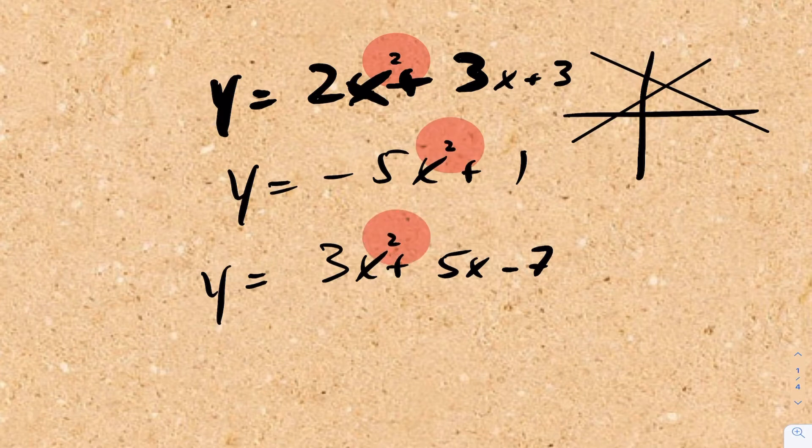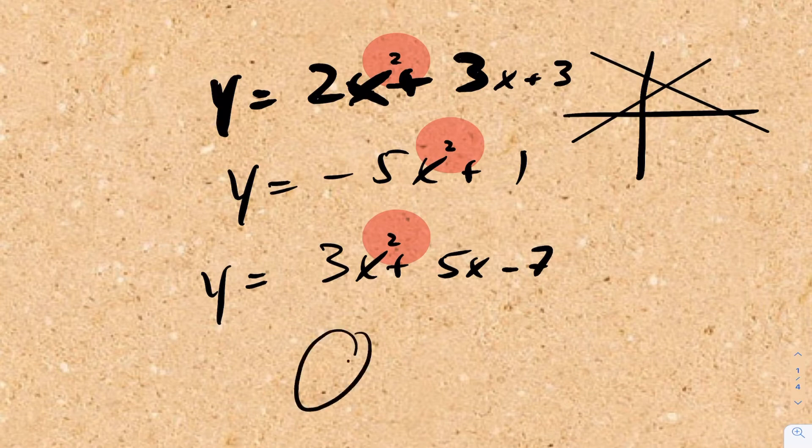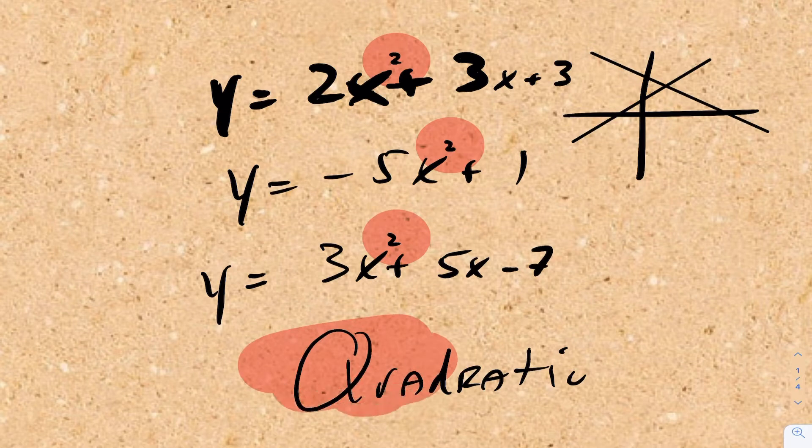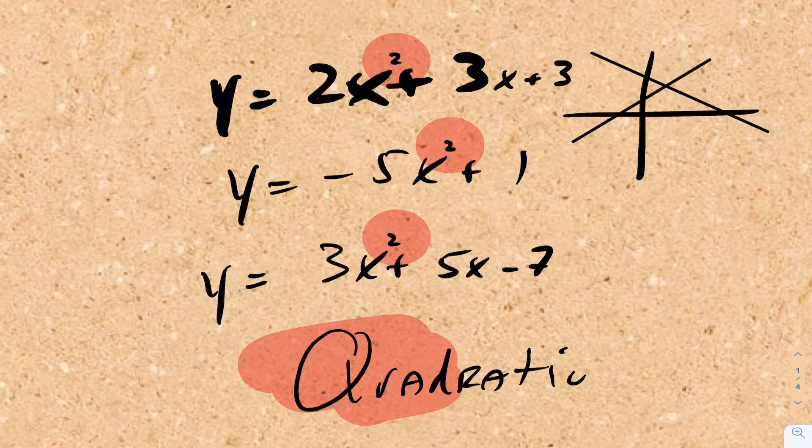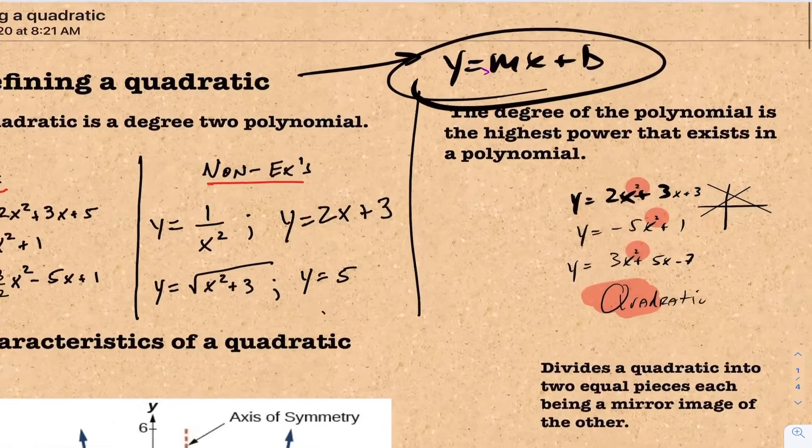what you have is you have what's known as a quadratic. And the word quad in Latin means to square, i.e. powers of 2. So that's what's going on here. We're looking at this idea of quadratics. Okay, so let's kind of take a look here.